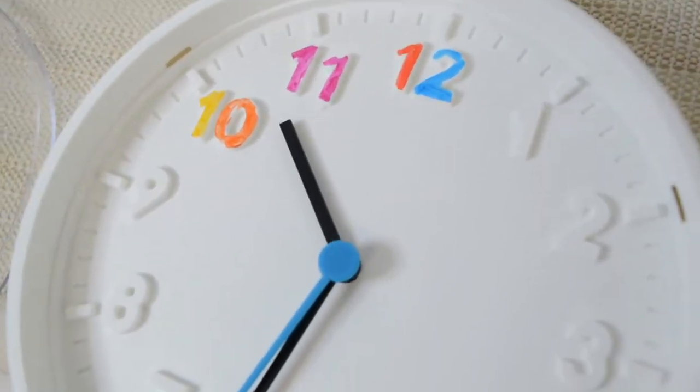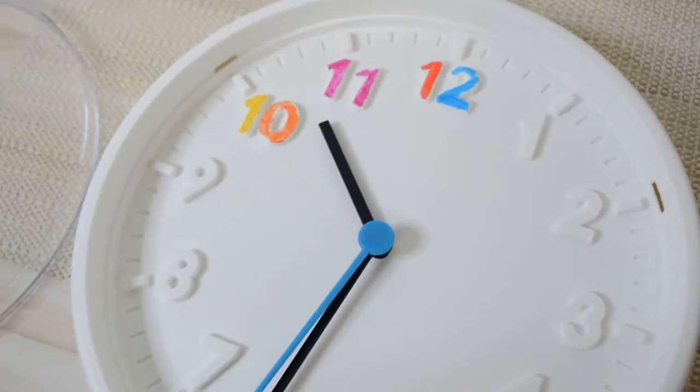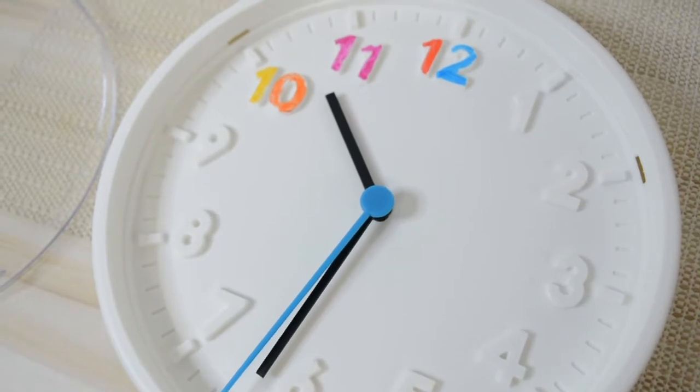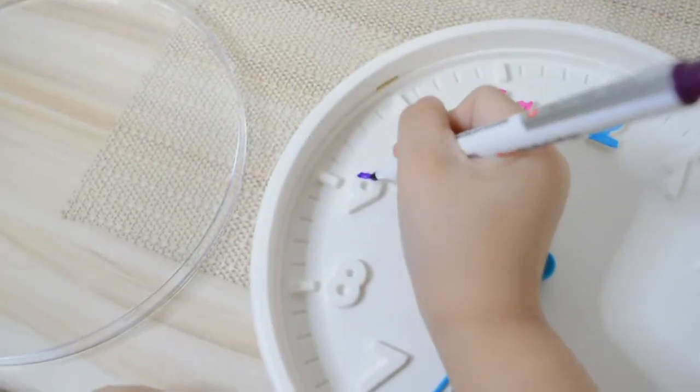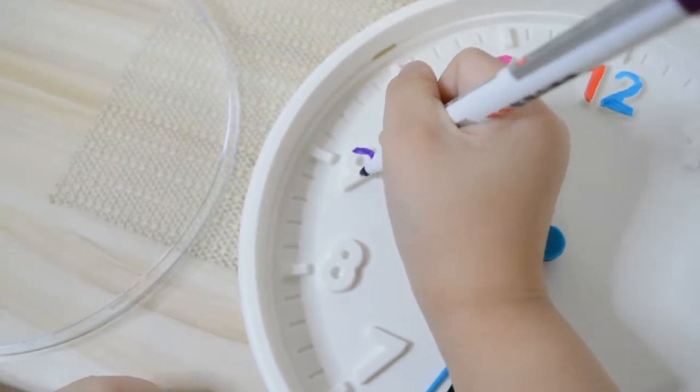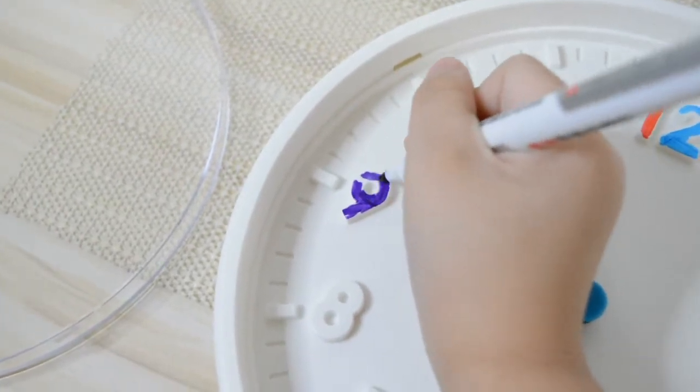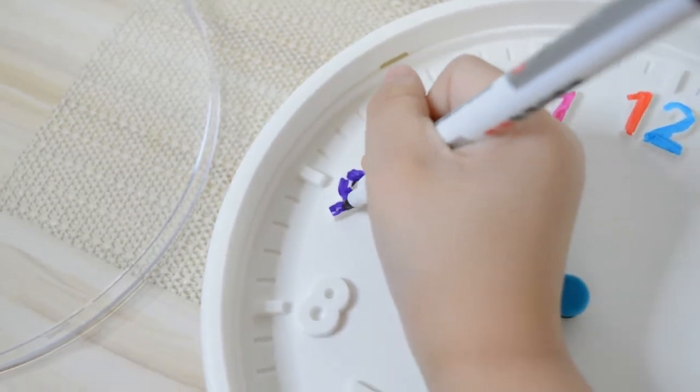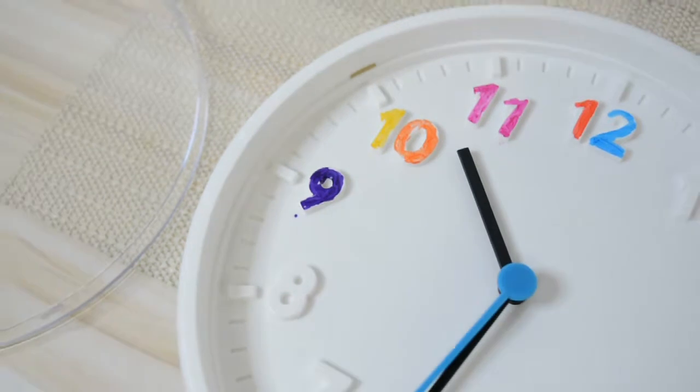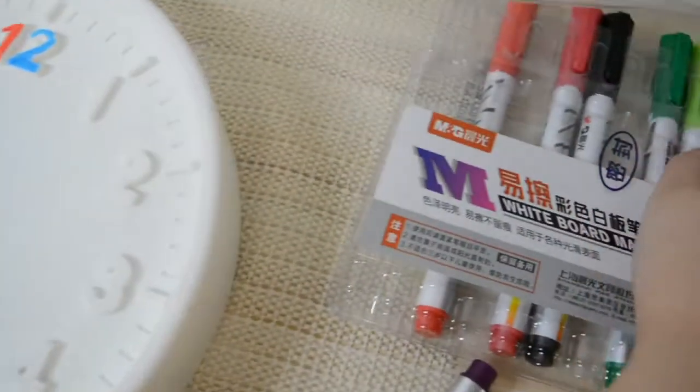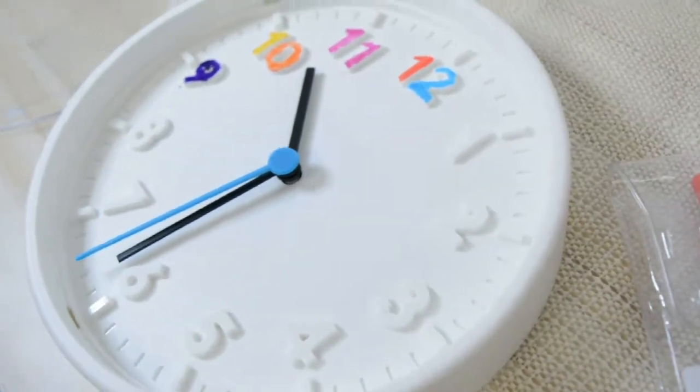Are you going to color the 1 or the 9? 9, 8, 7, 6, 5, 4, 3, 2, 1. Okay, you're going backwards. Now I only have one number left. Is this purple? Yes. Looks nice. Now we are going to color the 8. Are you using green? Yes.